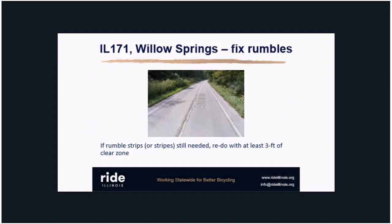In Willow Springs, there are rumble strips covering most of a paved shoulder — we believe this is actually less safe for cyclists than having no shoulder at all. If you try to ride over those rumbles you'll rattle badly and likely fall, but motorists approaching from behind may expect you to move into the paved shoulder. Our assertion is this is less safe, and we've asked IDOT that if they must have rumbles, to widen the shoulders, narrow the rumbles, and place them closer to the white line.